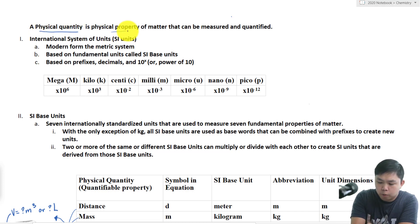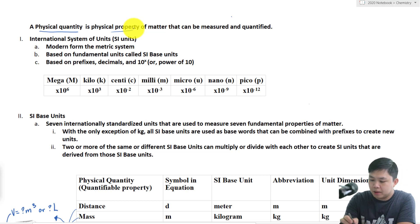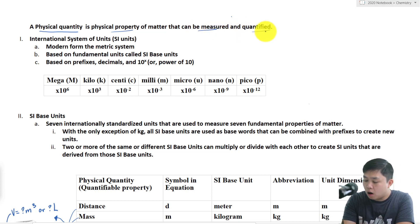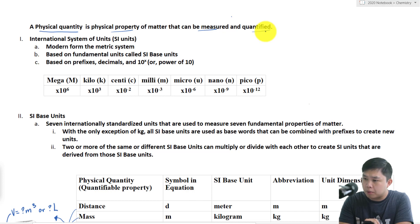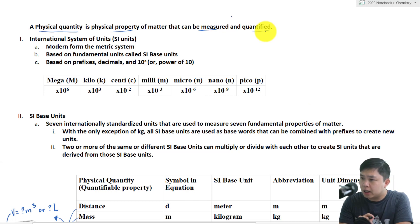A physical quantity is a physical property of matter that can be measured and quantified. Basically, we can look at a particular property of matter and use an instrument to collect quantitative data about it.